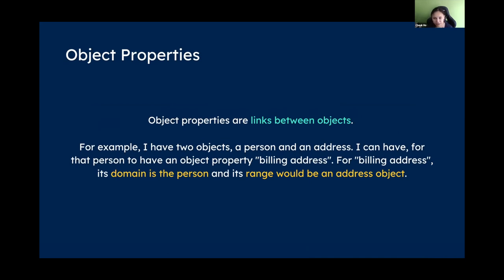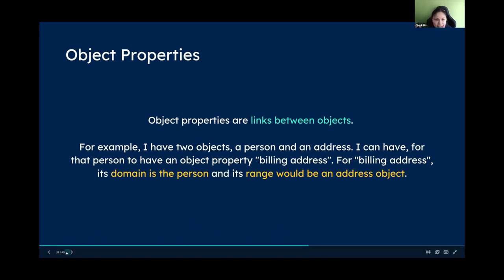An object property is like a link between two objects or documents. If you think in document API terms, it's embedding or referencing another document inside it. For example, 'managed by' would be an object property — a person referencing another person. Address is also an object property because it's a sub-document.